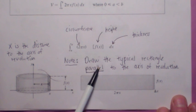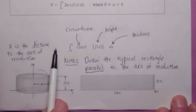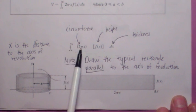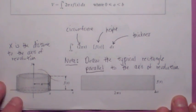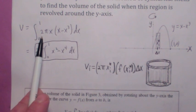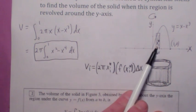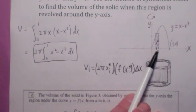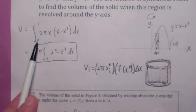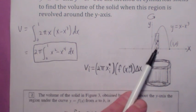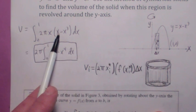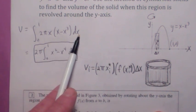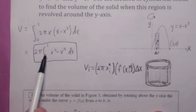We always draw the typical rectangle parallel to the axis of revolution. So the integral becomes the integral from a to b of the circumference times the height times the thickness. In this particular example, you're adding these up from 0 to 1, so you get the integral from 0 to 1 of 2πx — the distance to the axis of revolution — times f of x, which is x minus x cubed, dx. Then you could simplify it a little bit.